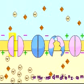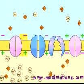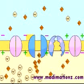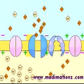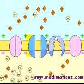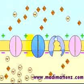Very quickly, the sodium channels close, while voltage-gated potassium channels open, allowing potassium ions to rapidly diffuse out. The cell returns to being positive on the outside and negative on the inside, and the potassium channels close.